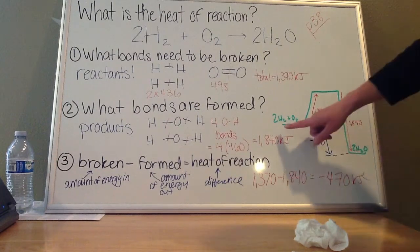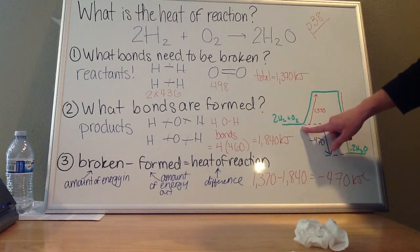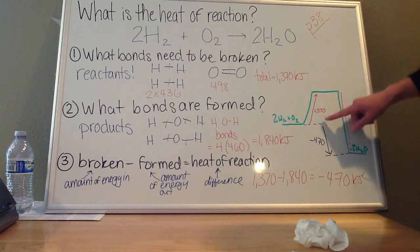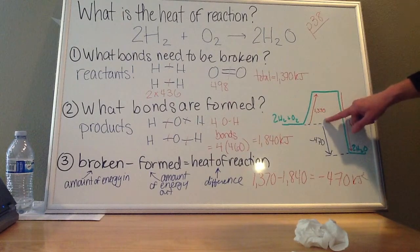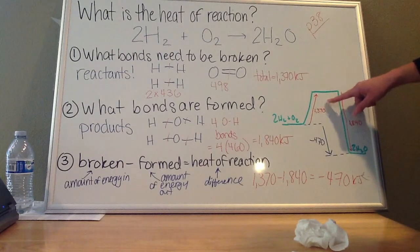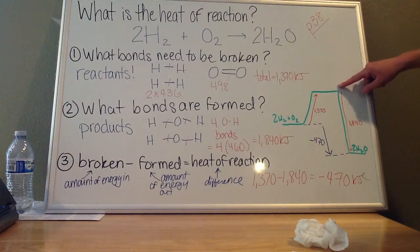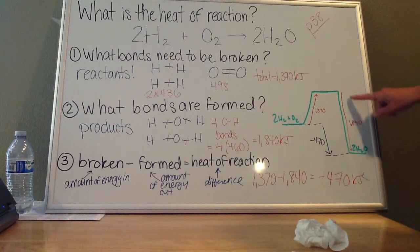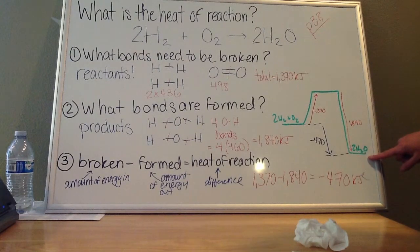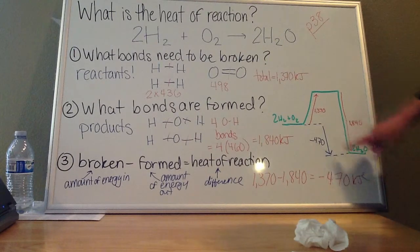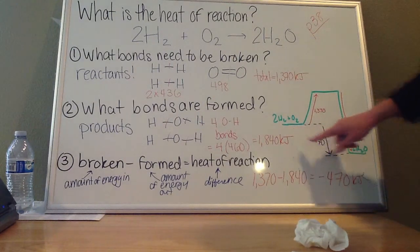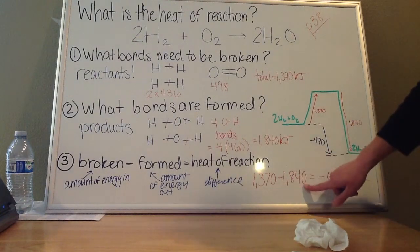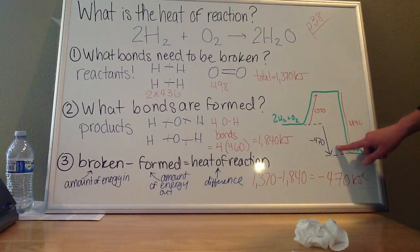And if you were to draw an energy diagram, it would look like this. So here's the energy of my reactants, the hydrogen and oxygen. It's going to go up by 1,370. This is my energy to break those initial bonds. This is otherwise known as my activation energy. That will put me in my transition state where I've broken bonds. I haven't formed all my new ones yet. And when I form those new bonds, that's going to release 1,840 kilojoules of energy. Notice how my products end up being lower in energy than I started with. And the difference here is going to be 1,370 minus 1,840. It's a difference of 470 kilojoules.